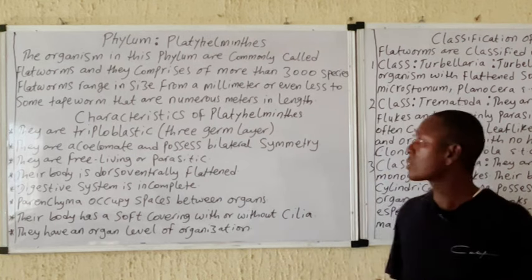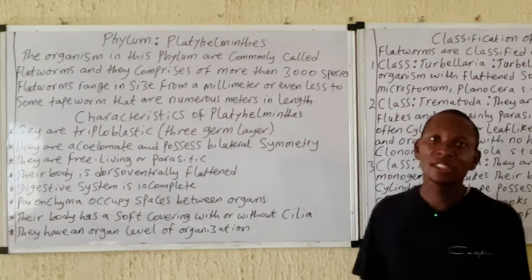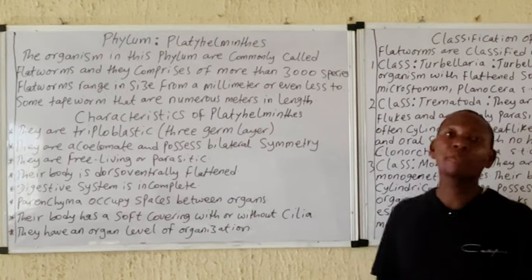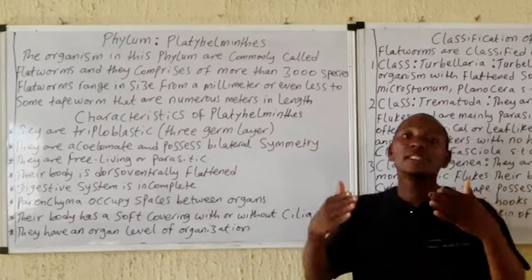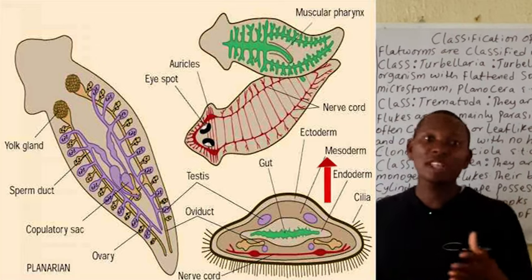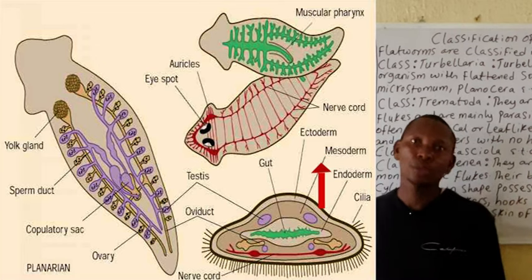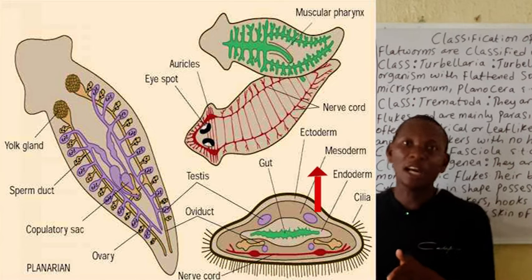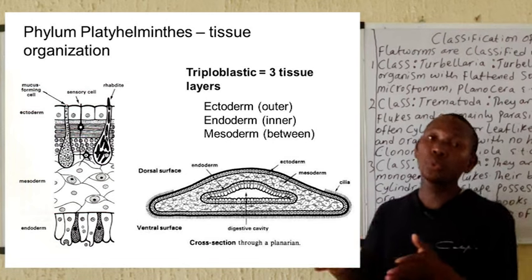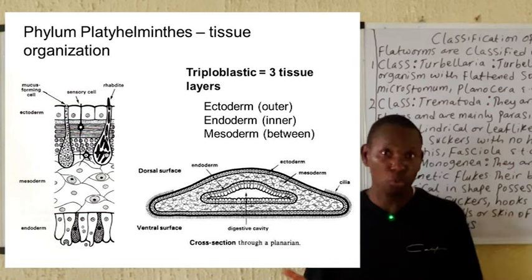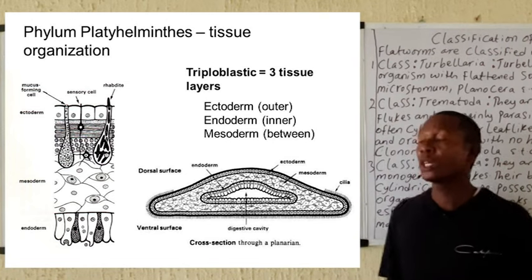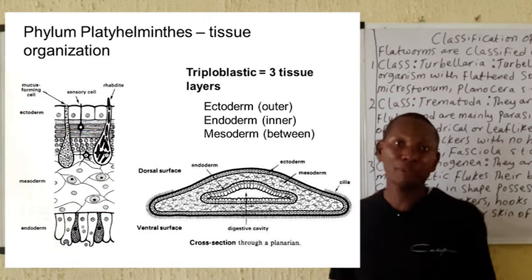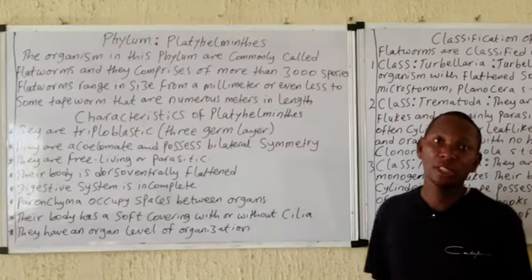Platyhelminthes generally have features or characteristics that include the fact that they are triploblastic, meaning they possess three germ layers — the ectoderm, the mesoderm, and the endoderm. Terminology may vary. We also have the fact that they can be parasitic or free-living depending on the species.